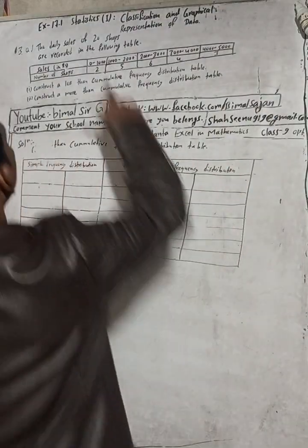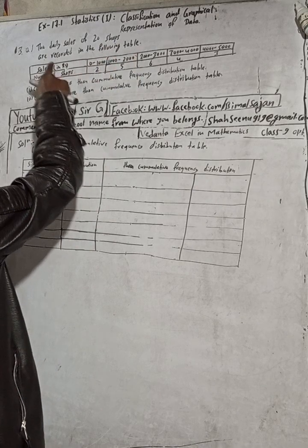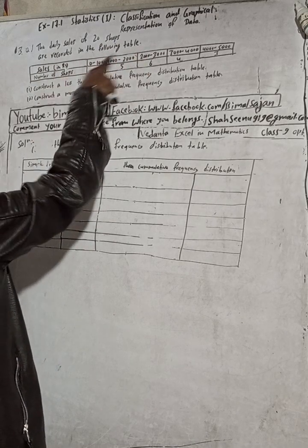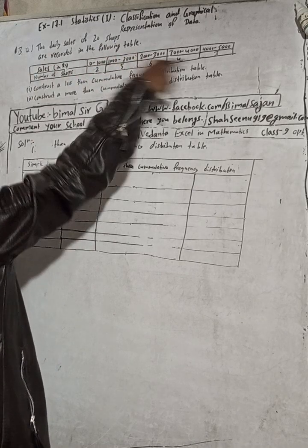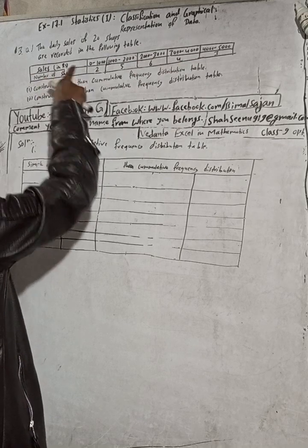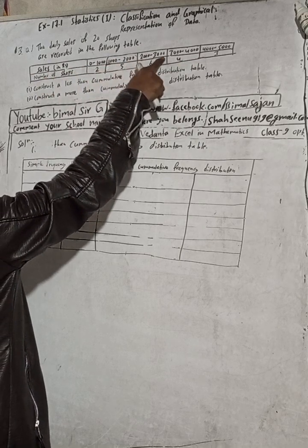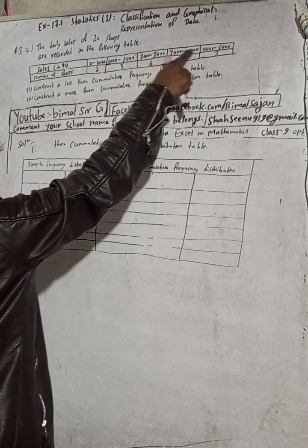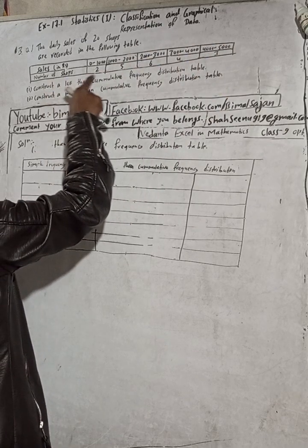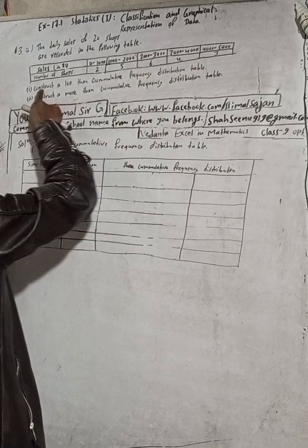The daily sales of 20 shops are recorded in the following table. Sales in rupees: 0 to 1,000; 1,000 to 2,000; 2,000 to 3,000; 3,000 to 4,000; 4,000 to 5,000. And the number of shops is: 2, 5, 6, 4, and 3 shops respectively.